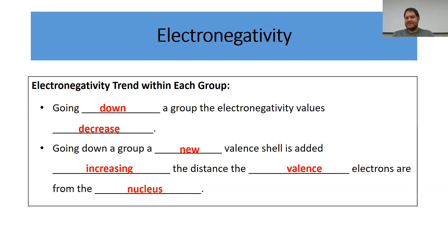Those are the two periodic trends for electronegativity that you should be aware of. And that's it for this lesson. We will pick up more about electronegativity in future lessons — especially the next lesson, where it's going to be critical to your understanding of lesson seven to get a better feel of the results of covalent bonding and electronegativity consequences. So that's it for now. We'll see you next time.